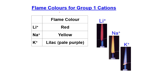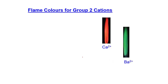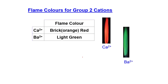For Group 1 cations, three elements are tested: lithium produces a red flame, sodium produces a yellow flame, and potassium produces a lilac (pale purple) flame. For Group 2 cations, two elements are tested: calcium produces a brick red or orange-red flame, and barium produces a light green flame.